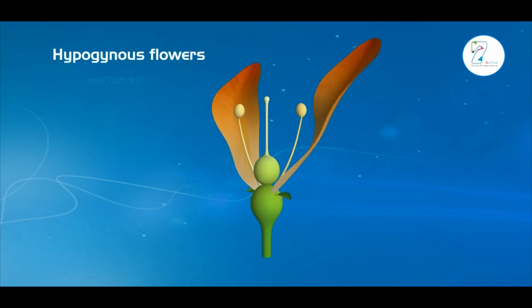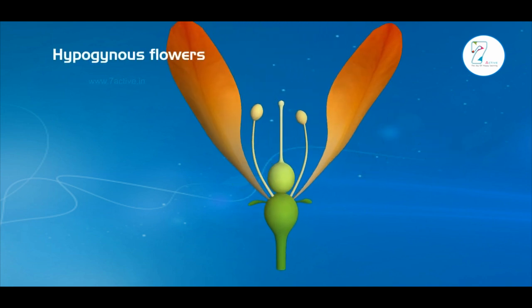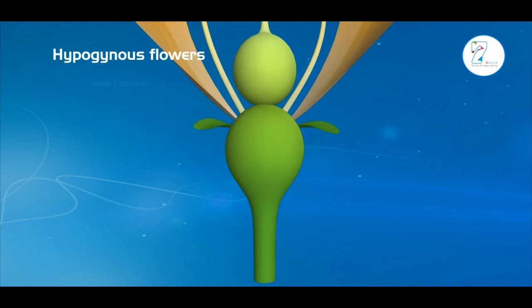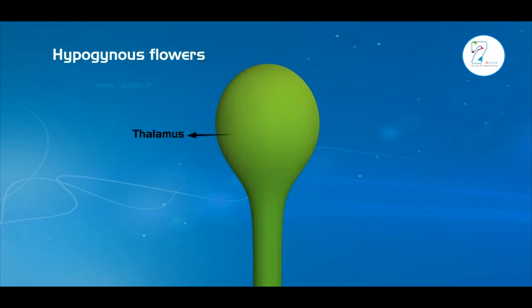1. Hypogynous flowers. Thalamus is convex or conical.